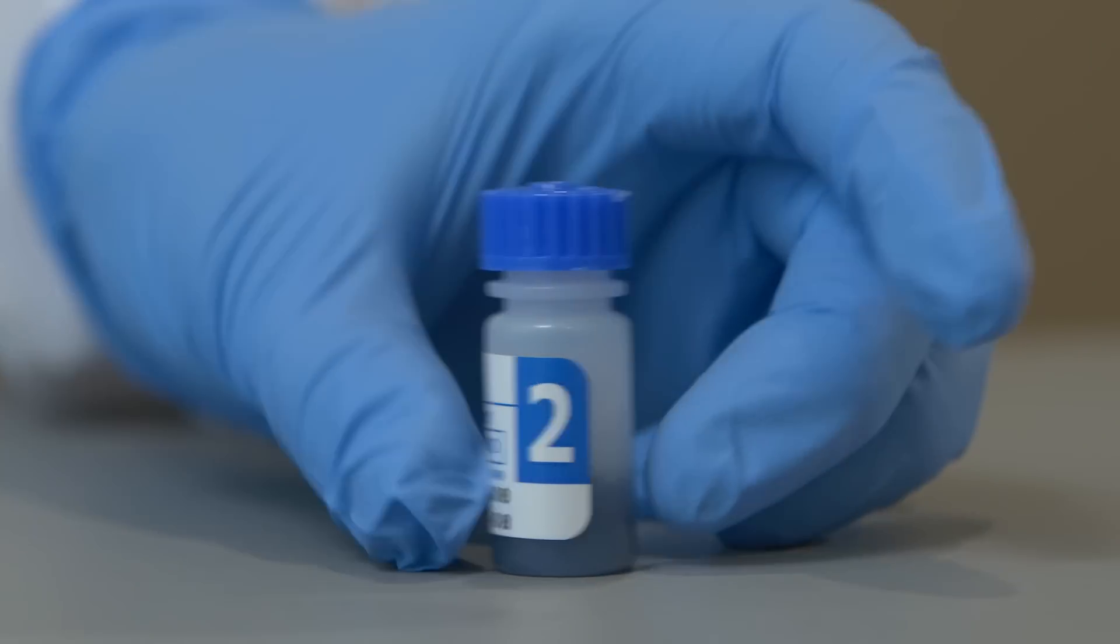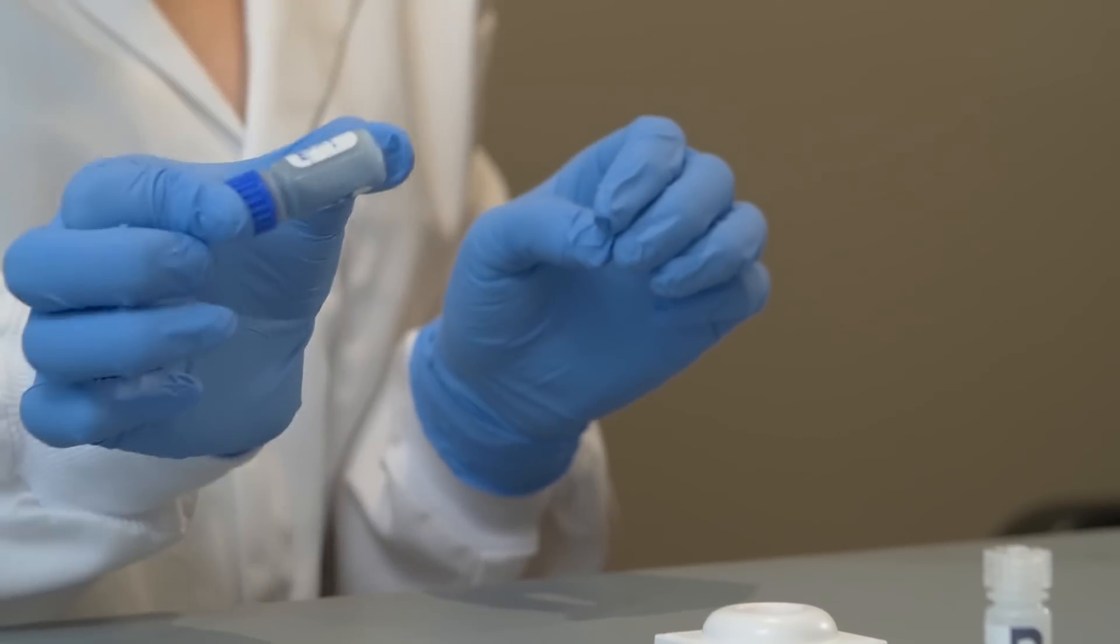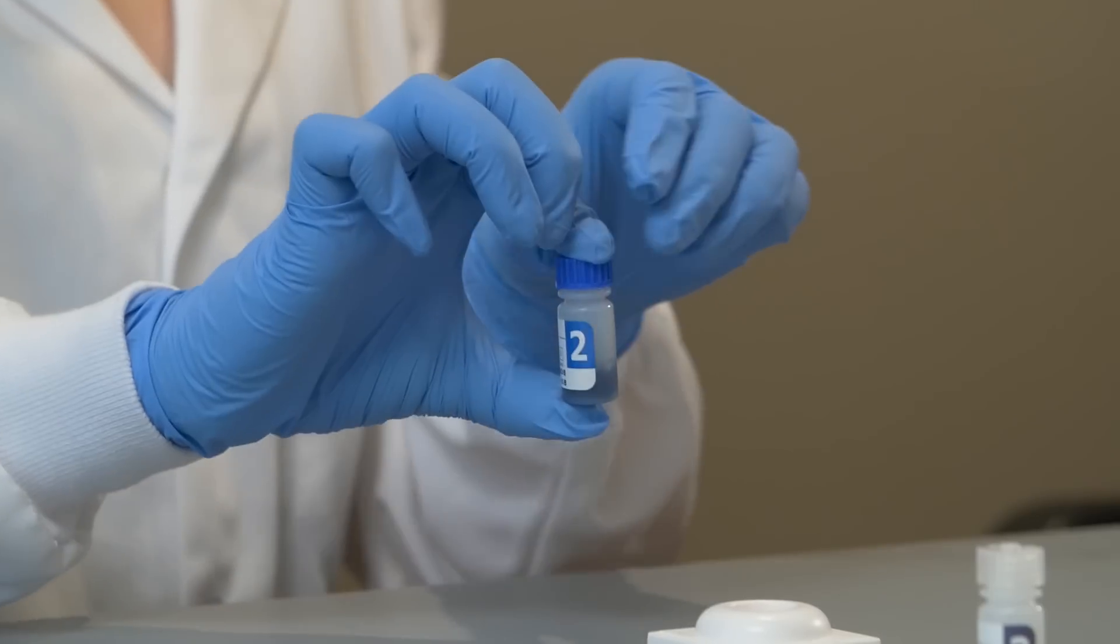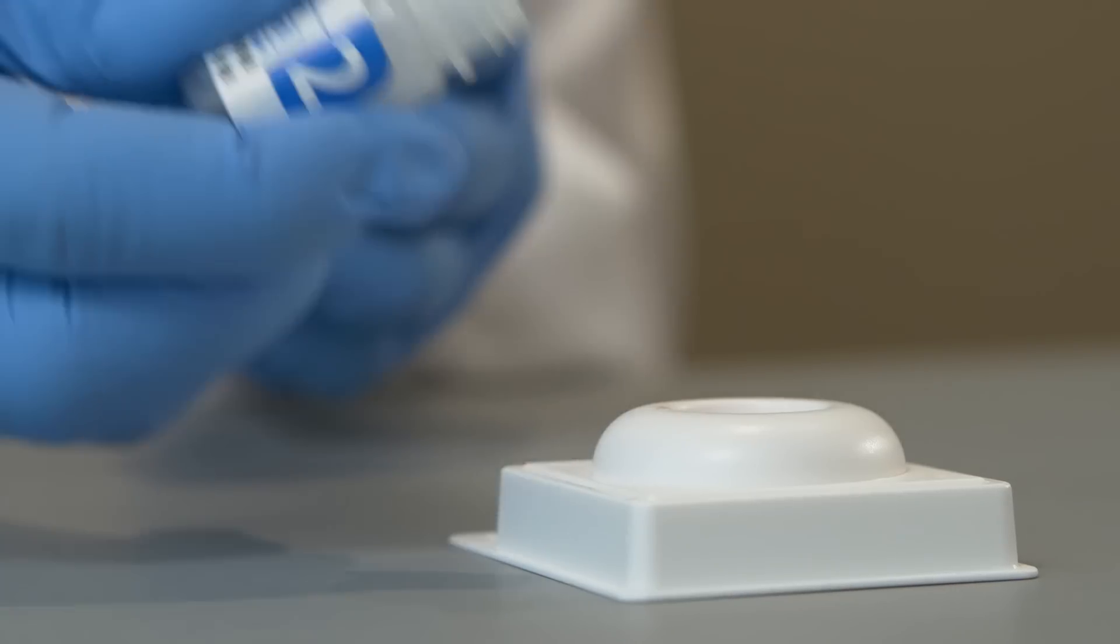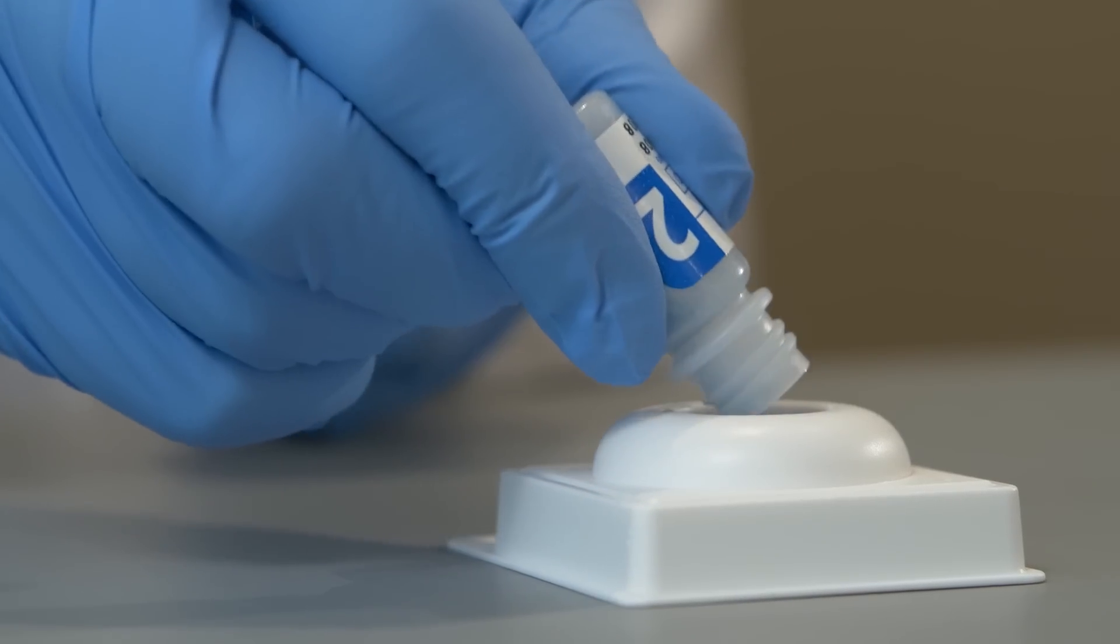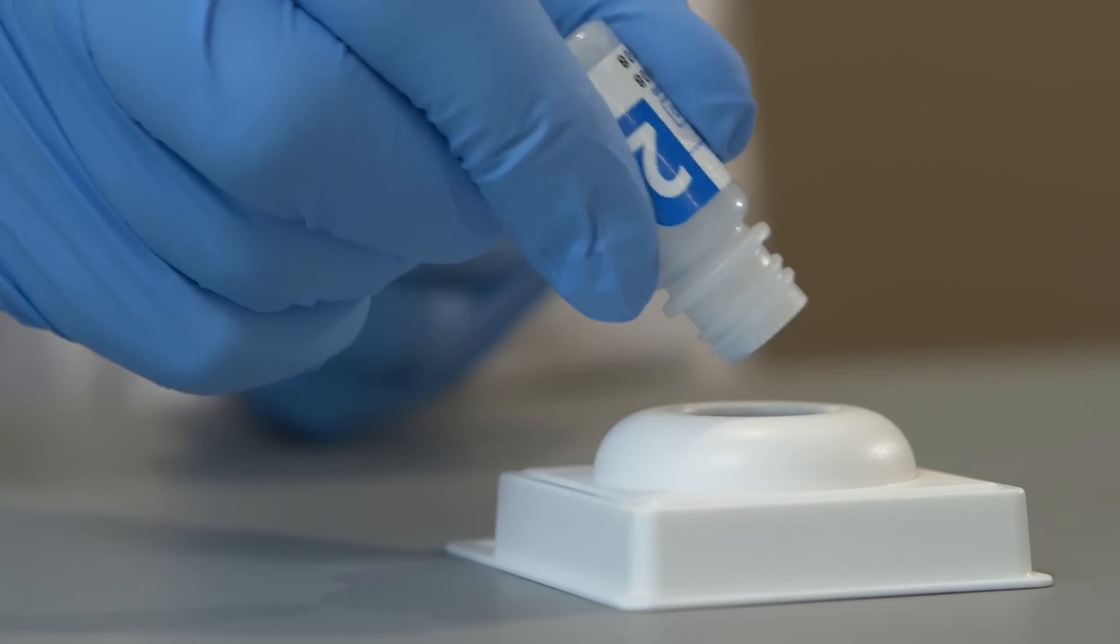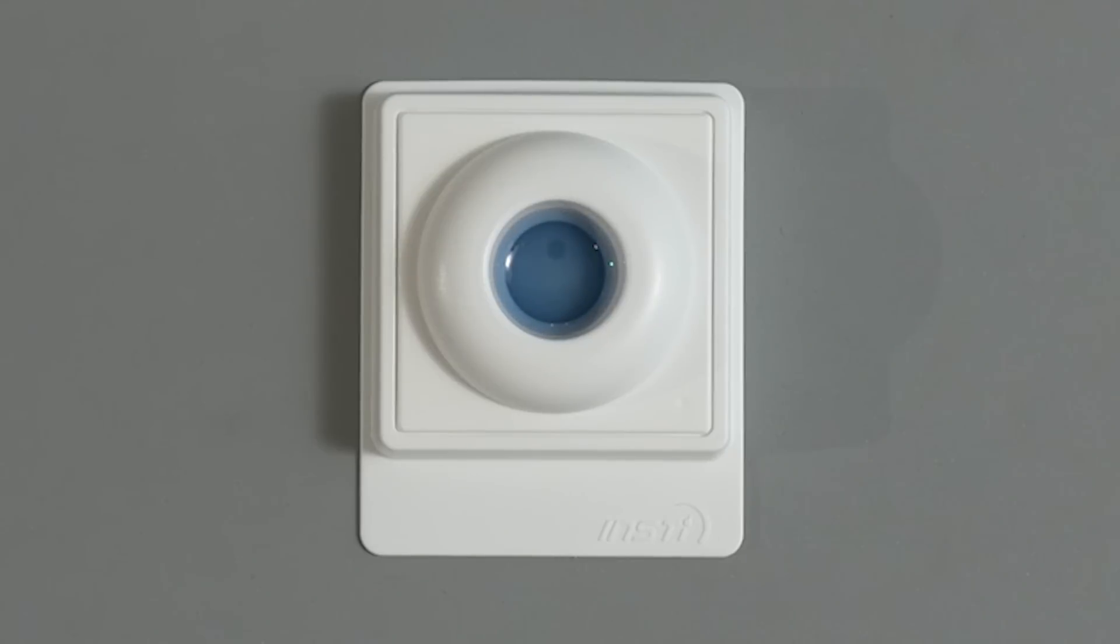Resuspend the color developer by slowly inverting. Mix the solution thoroughly until the reagent is evenly suspended. Pour the entire contents of bottle number two into the centre of the membrane unit. The solution should be absorbed quickly. Wait for the solution to be absorbed completely.